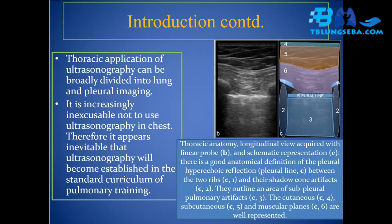Thoracic anatomy: a longitudinal view acquired with a linear probe shows good anatomical definition of the pleural hyper-echoic reflection, the pleural line, between the two ribs and their shadow cone artifacts. These outline an area of sub-pleural pulmonary artifacts. The cutaneous, subcutaneous, and muscular planes are well represented.